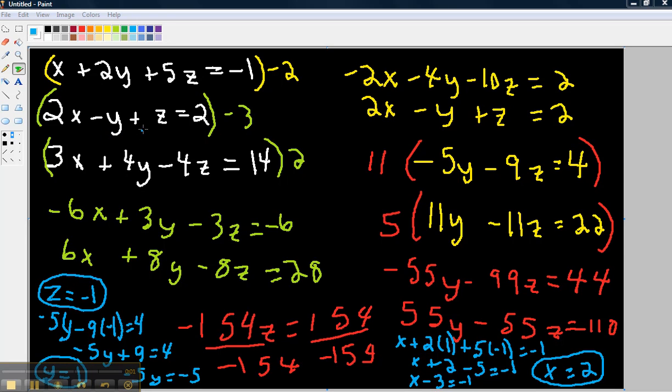Okay, here we have three equations, three variables. Looks like a lot, but we'll walk through the problem. The problem is here: x plus 2y plus 5z equals negative 1, 2x minus y plus z equals 2, and 3x plus 4y minus 4z equals 14.